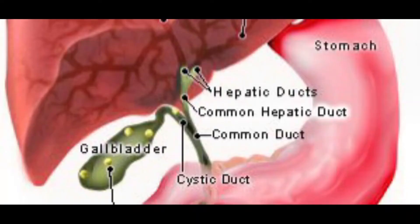The gallbladder is a pear-shaped organ that is found beneath the liver. What is the function of the gallbladder? The gallbladder stores bile that is produced by the liver. What is the function of bile? Bile emulsifies fat during digestion.